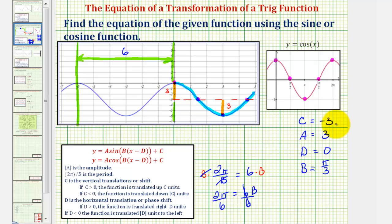Now we have everything we need to write the equation of our function graphed here in blue. We would have y equals A, which is positive three, times cosine of B, which is pi over three, times the quantity x minus D, but remember D is zero, since there's no horizontal shift, we just have times x, and then plus C, and since C is negative three, we just write minus three. This equation would give us the graph of our blue function.